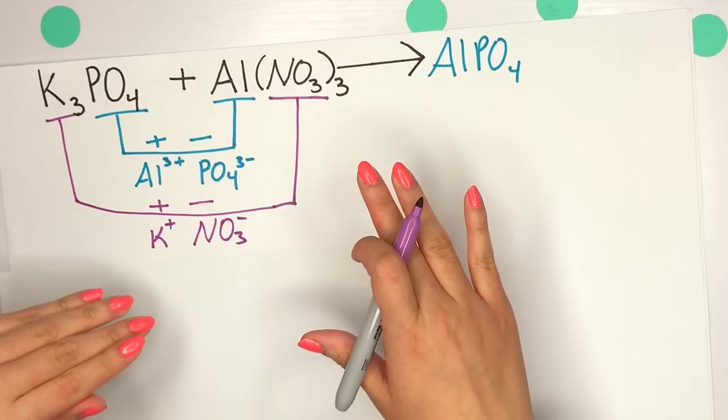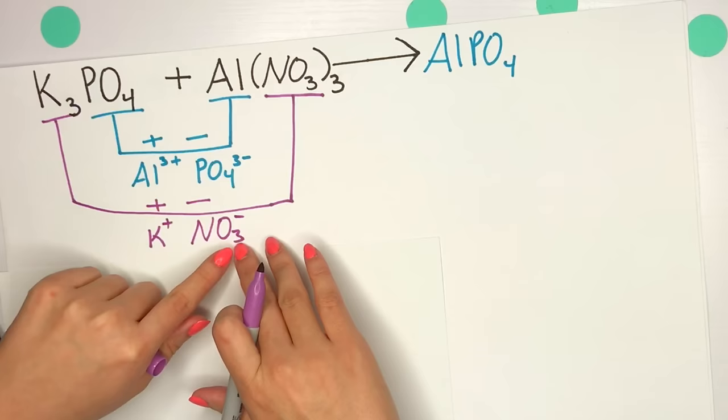Same thing with this other subscript of 3 for nitrate. I did not bring that down. This is a totally different 3. I took that 3 from O3 because that's just what our polyatomic atom is. So these other subscripts do not come down when you're predicting your products.